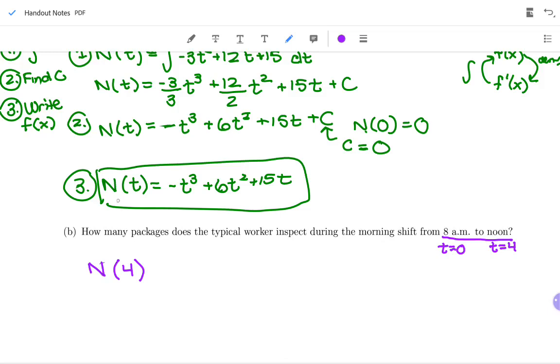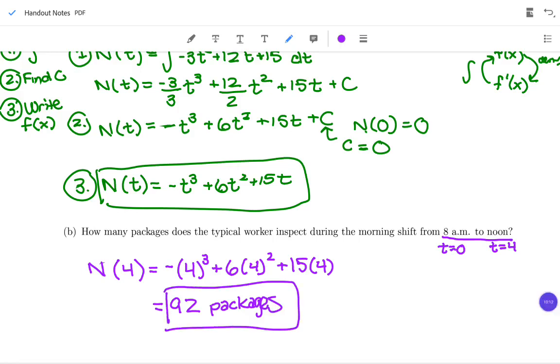N tells me the total, and N prime tells me the rate that they're inspecting packages. So what do I want? How many packages does a typical worker inspect? I want the total amount that they've inspected during the morning portion of their shift. It doesn't say how fast are they inspecting packages at noon. If it said how fast are they inspecting at noon, that instantaneous change, finding that rate at one instant, that would be plugging into N prime, the derivative. But if I want the total number of packages, I plug into this antiderivative. That'll tell me the total. So I'd put a negative out front, I'd do 4³ + 6×4² + 15×4, and I would say N(4) is 92. And 92 what? 4 hours in, they've inspected 92 packages. And we just did our first word problem for our antiderivative.